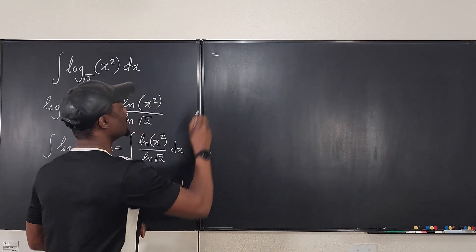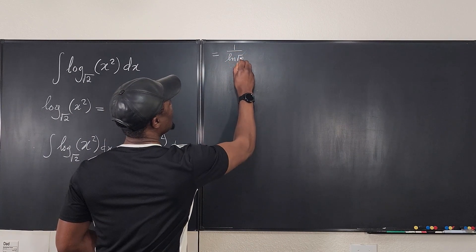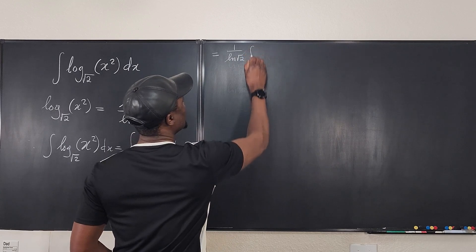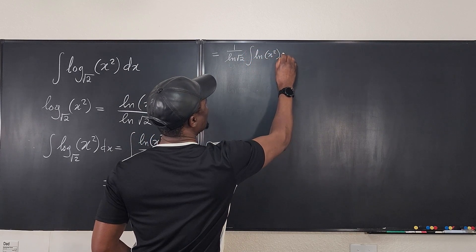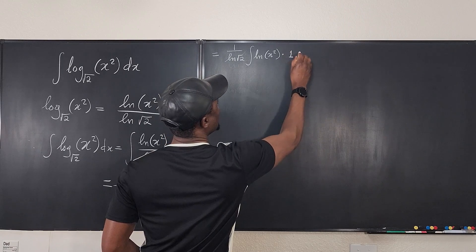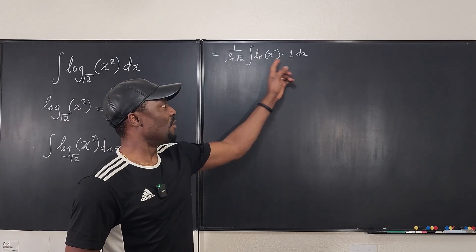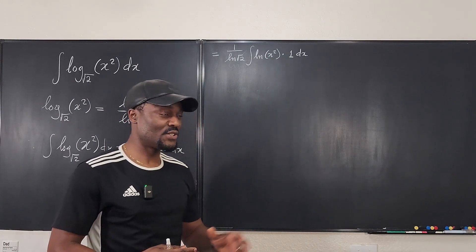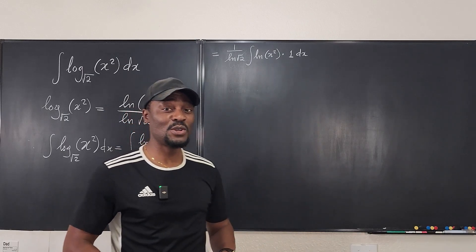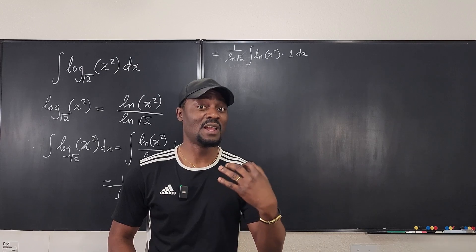It's going to be equal to 1 over the natural log of the square root of 2 times the integral of the natural log of x squared multiplied by 1 dx. You see, if you multiply this by 1, it doesn't change anything, but it provides me the opportunity to see this as a product. And then I'm going to use the product rule of integration, which we call integration by parts.